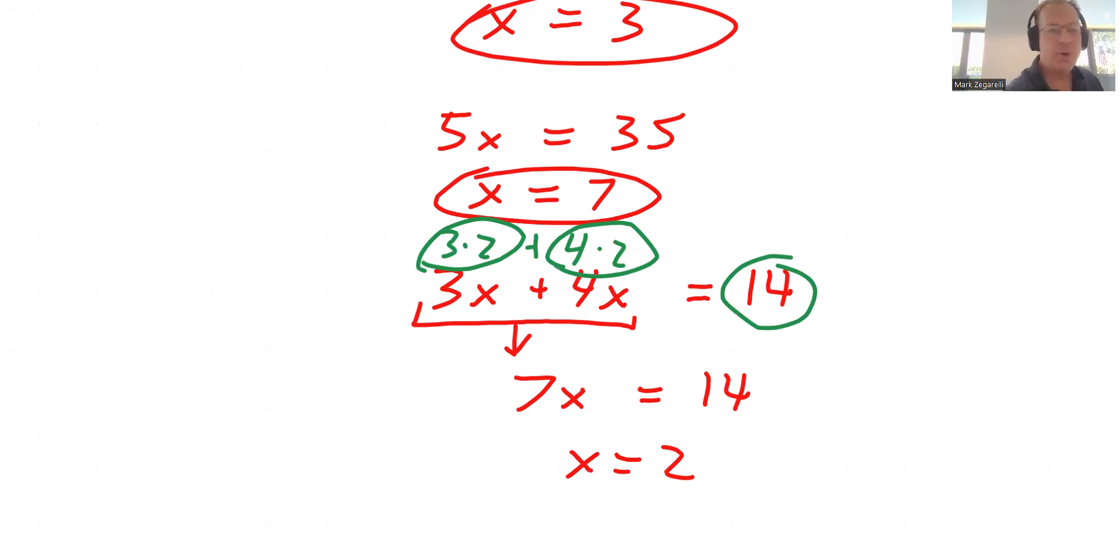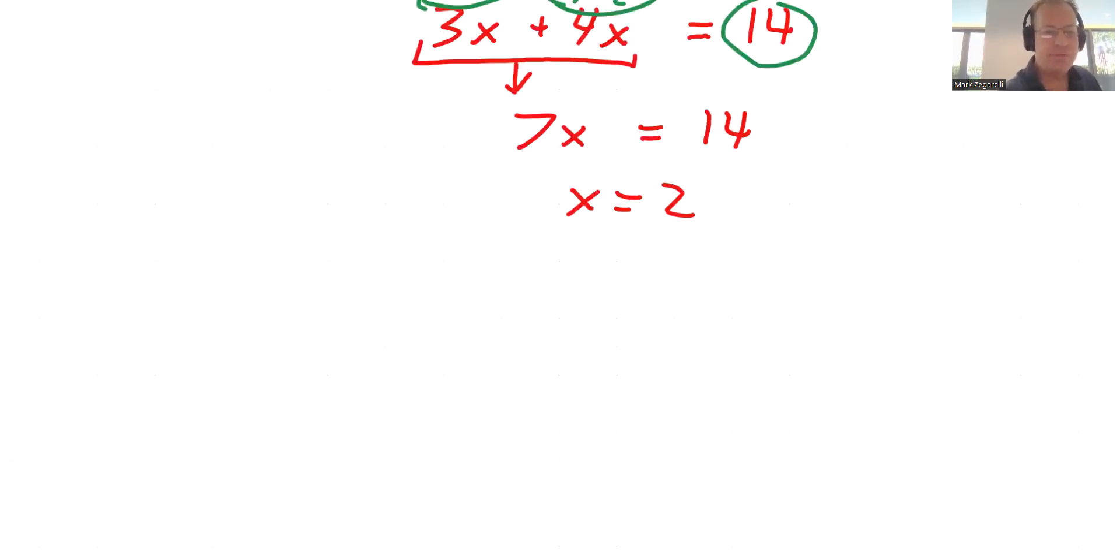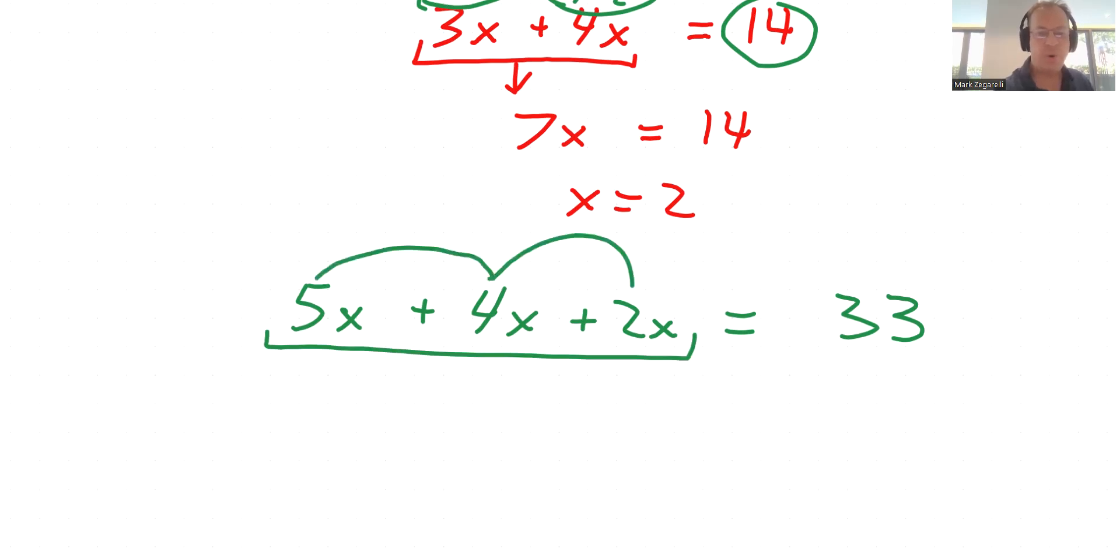But that's a lot harder to see. And as problems get more difficult, like if we have 5x plus 4x plus 2x equals 33, I would say that it'd be pretty difficult to figure out what that is without getting into a system. And the system here would be, how does this simplify? 5 plus 4 is 9 plus another 2 is 11. That means that this all boils down to 11x equals 33.